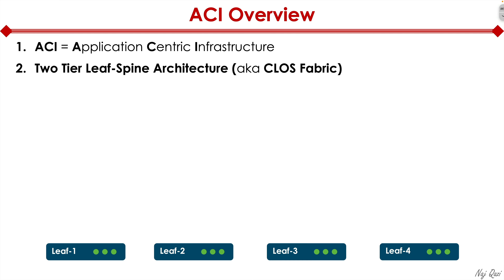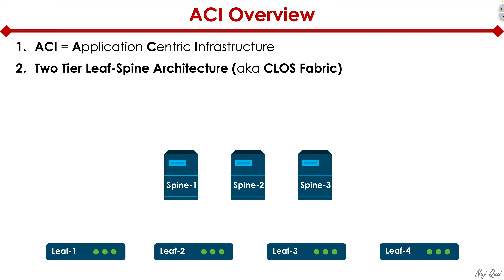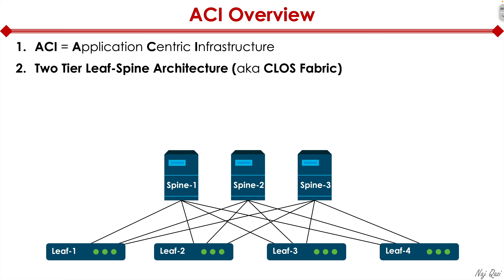In the two-tier leaf-spine architecture, at the bottom of our network we have leaf switches — in this example, four leaf switches — and we also have spine switches, in this instance three. The way these switches are interconnected: none of the spines are directly connected with each other, and none of the leaves are directly connected with each other. Instead, all leaf switches connect with all spines, and all spines connect with all leaves within that environment. This physical connectivity is a key concept.